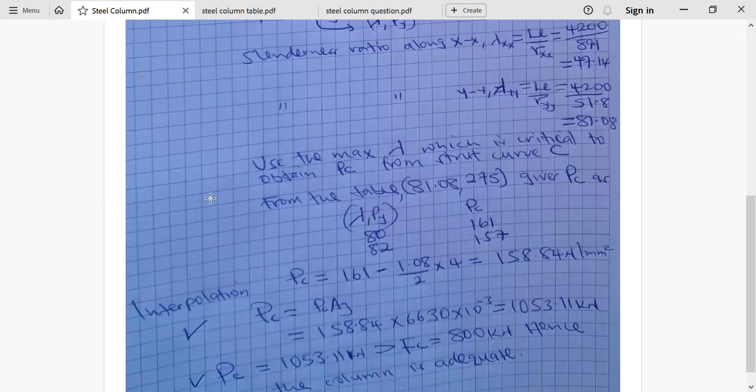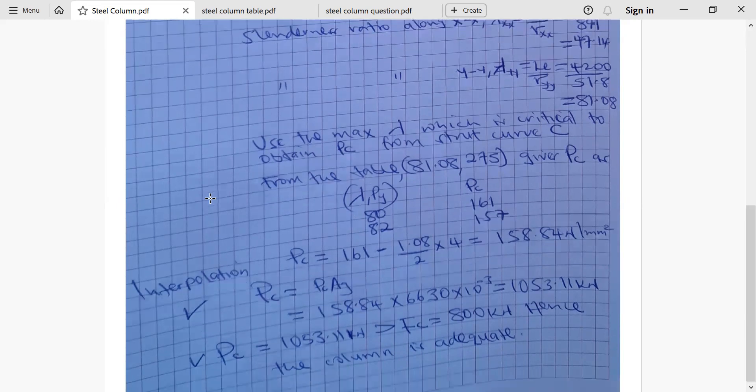Now, by interpolation, we'll say PC at 81.08 is basically PC at 80 minus the difference from 80 to 81.08, which is 1.08, divided by from 80 to 82 is 2 units times 4. This 4 is the difference in strength at 80 and 82. So, you find our value at 81.08 will be 158.84 newton per millimeter squared.